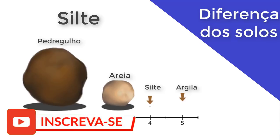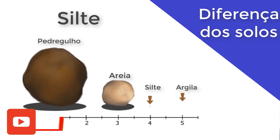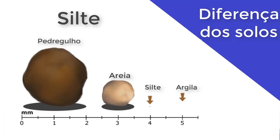Em geral, o silt não tem essa ligação molecular entre as partículas que o faça ser considerado um solo coesivo. Se ele for considerado coesivo, é porque existem partículas de argila fazendo essa ligação dentro do solo. O solo do tipo silt é pouco encontrado no seu estado puro — em geral, é encontrado em solos arenosos ou argilosos, como argila siltosa, silt argiloso, areia siltosa ou silt arenoso.